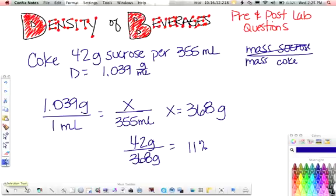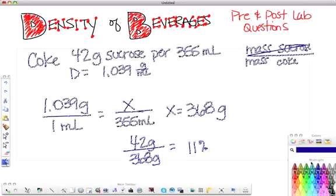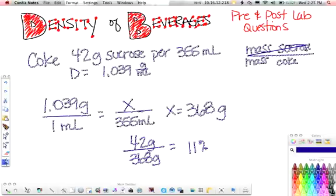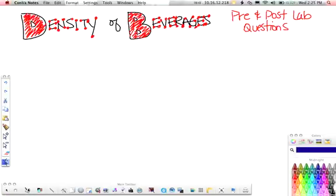And then number five asks you to calculate your percent error. So number five says use the following equation to calculate the percent error in your experimental determination of the sugar content. Enter the percent error. So the measured value is what you got from the graph.